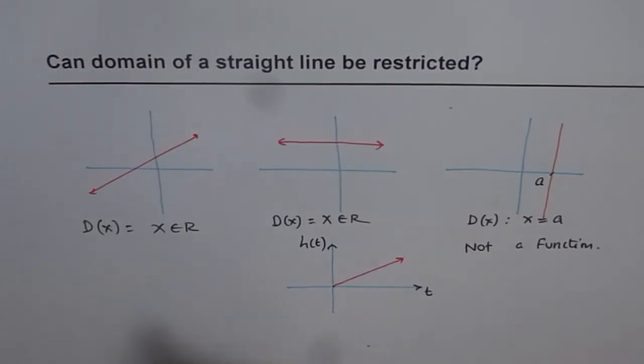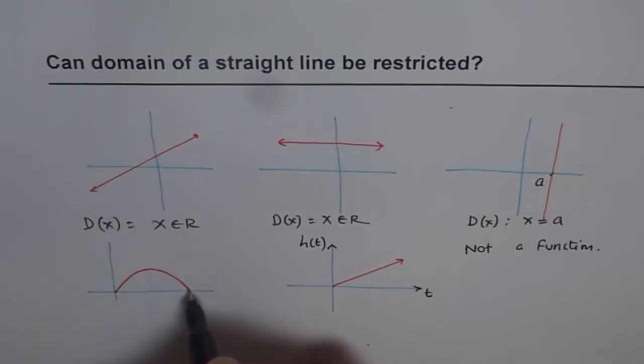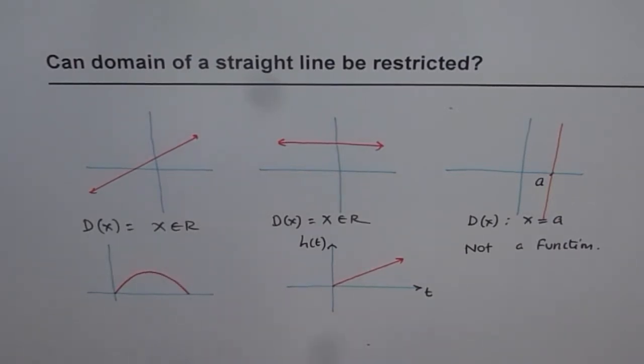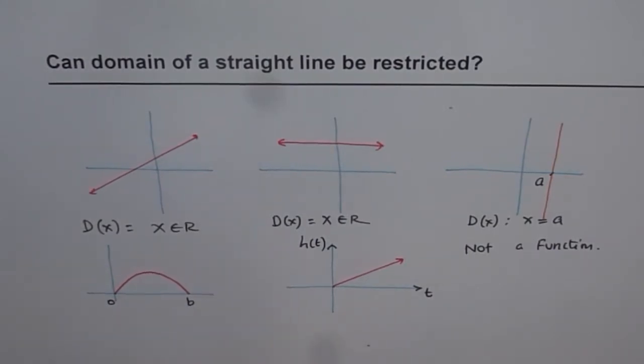Also, we consider the functions which are like a ball is kicked. Now if the ball is kicked, then it goes from let's say some level on the ground to another level, right? Now in this particular case we have restriction. It is from 0 to let's say b when the ball falls down. So in this case x belongs to real numbers where x is greater than equals to 0 but less than equals to b, right?